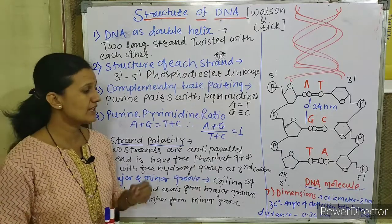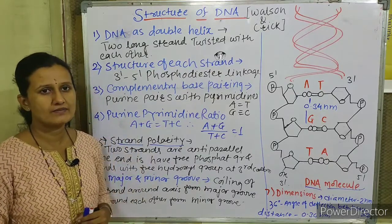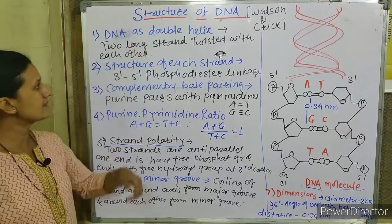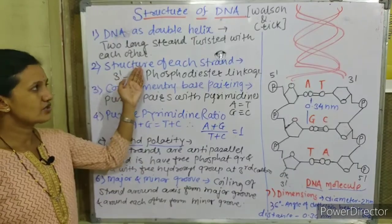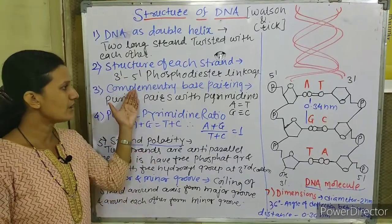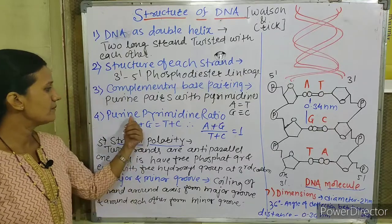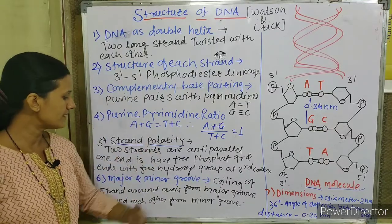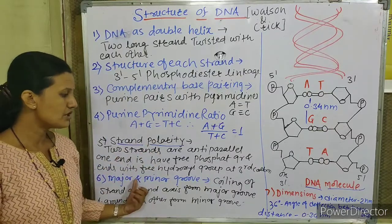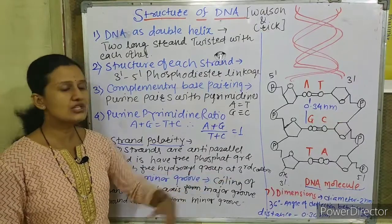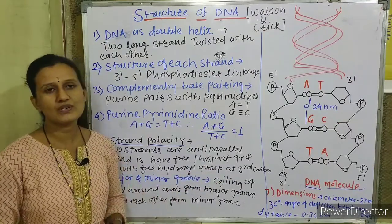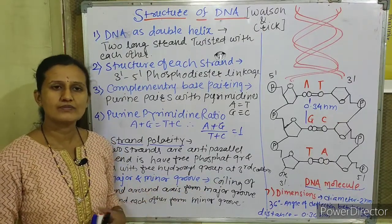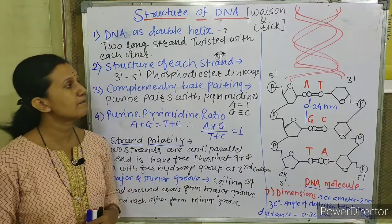The structure of DNA has the following seven main points: first, DNA has a double helix; second, the structure of each strand; third, complementary base pairing; fourth, purine-pyrimidine ratio; fifth, strand polarity; sixth, major and minor grooves; and seventh, the dimensions of the two strands — how long they are and what their breadth is.